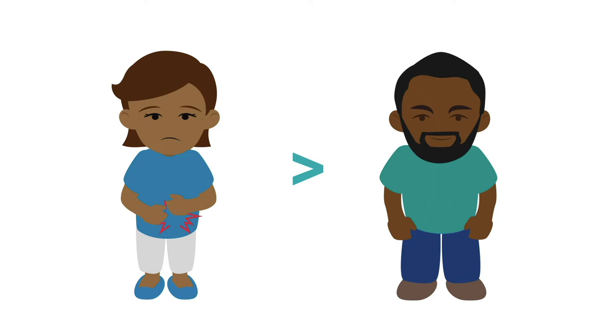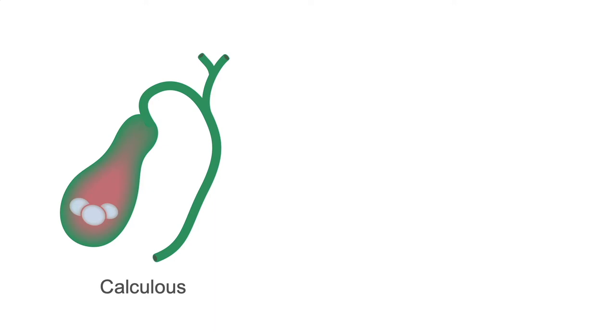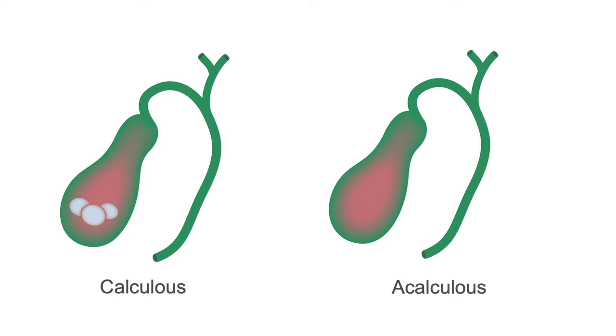So what causes cholecystitis? The pathophysiology of cholecystitis can be calculous, with a stone, or acalculous, without a stone, which is less common in only about 5-10% of cases.